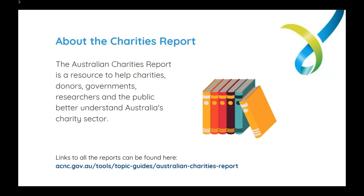The name of this most recent report is called Australian Charities Report 2017. Even though it's coming out in 2019 and is the most recent look at the charity sector, it's named the 2017 one because of the annual information statements that were analysed to produce the data. The report is a resource to help not only charities, but donors, governments, researchers, and even the public better understand Australia's charity sector. Previous years' reports are all on the ACNC website.